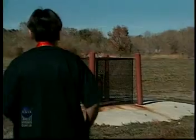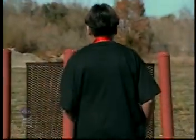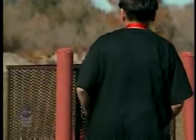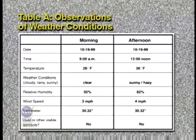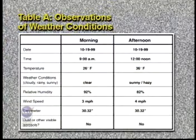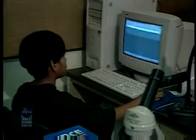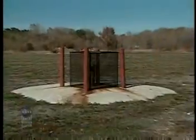Each group is then assigned an area on the school grounds in which to place its sampler. Each group completes the morning column on Table A, Observations of Weather Conditions, on Student Data Worksheet Number 1. You'll need to refer to the local paper, watch the local weather report, or visit www.weather.com before completing your observations.